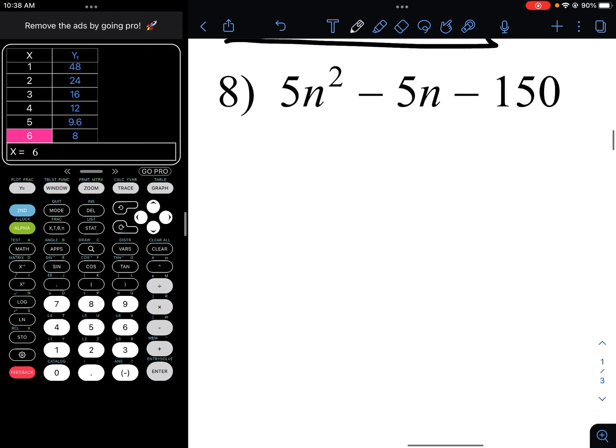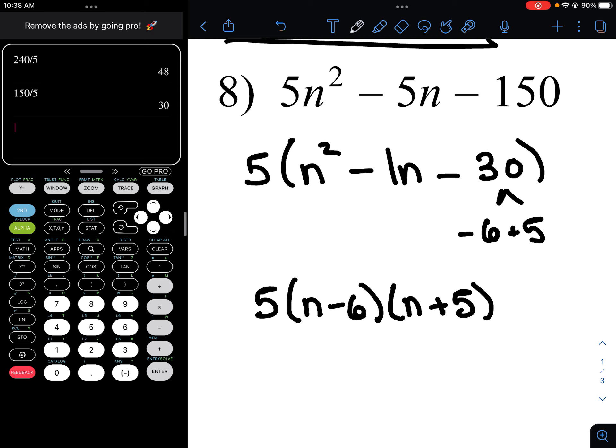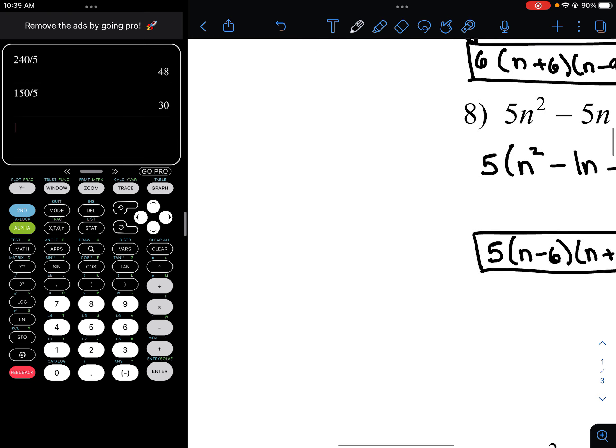Once again, bring out a 5. We're looking at n squared minus 1n minus 150 divided by 5. If you know your factors of 30, that would be 6 and 5. And we need it to add to a negative. So negative 6, positive 5. And that helps from there.